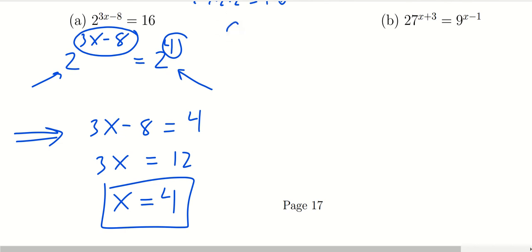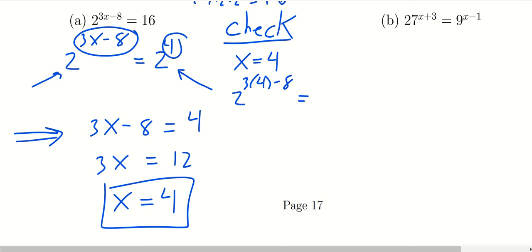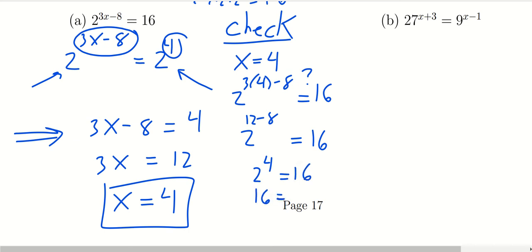One nice thing about equations is that we can check them. Plugging x equals 4 into the original equation: 2 raised to 3 times 4 minus 8. In the exponent, 3 times 4 is 12, and 12 minus 8 is 4. We know 2 to the 4th is 16, which matches. So plugging in x equals 4 gives a true statement, verifying that x equals 4 is our solution.